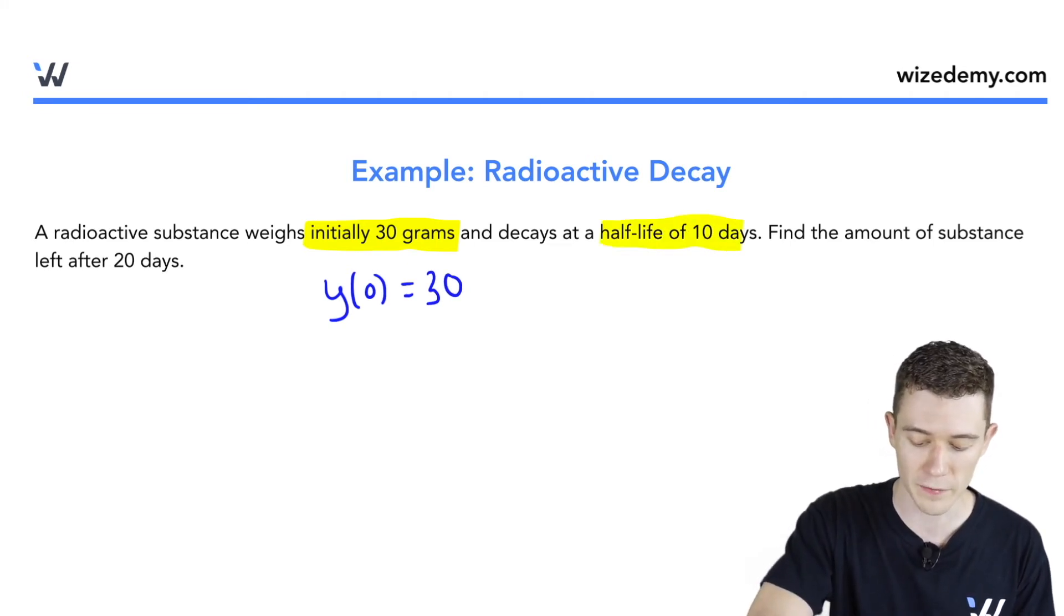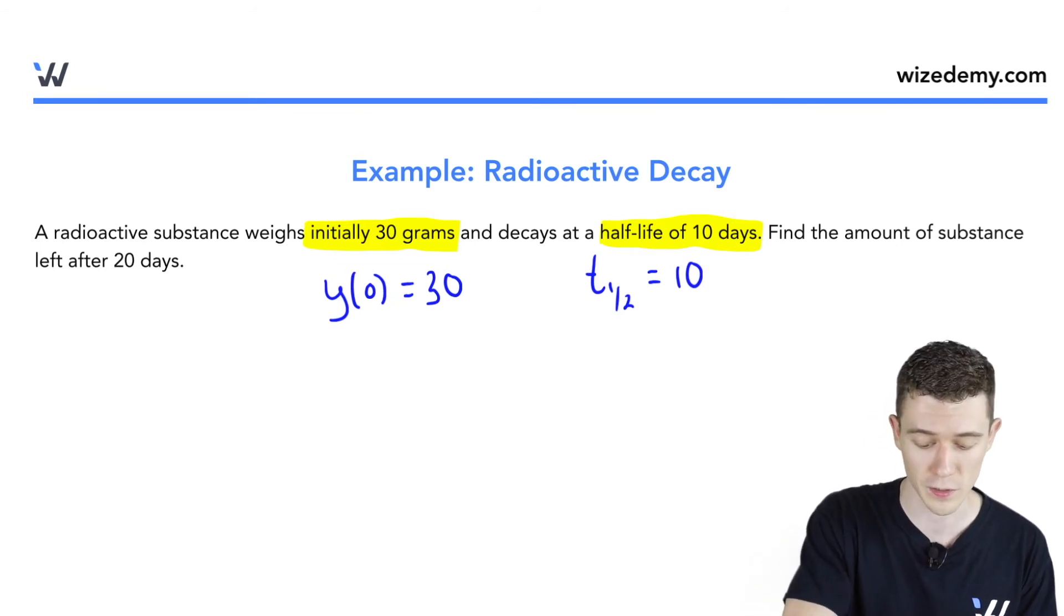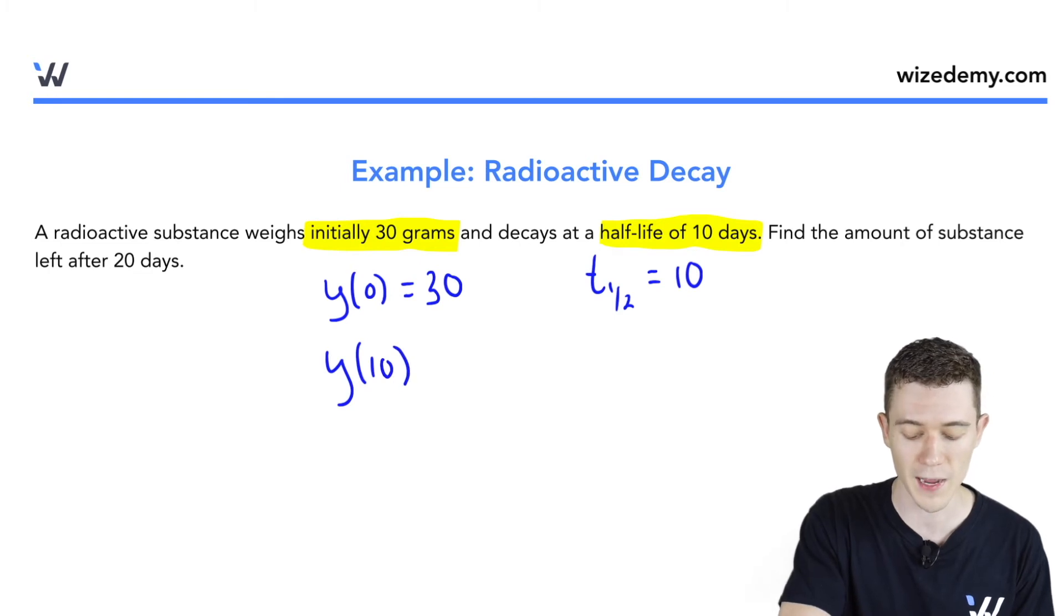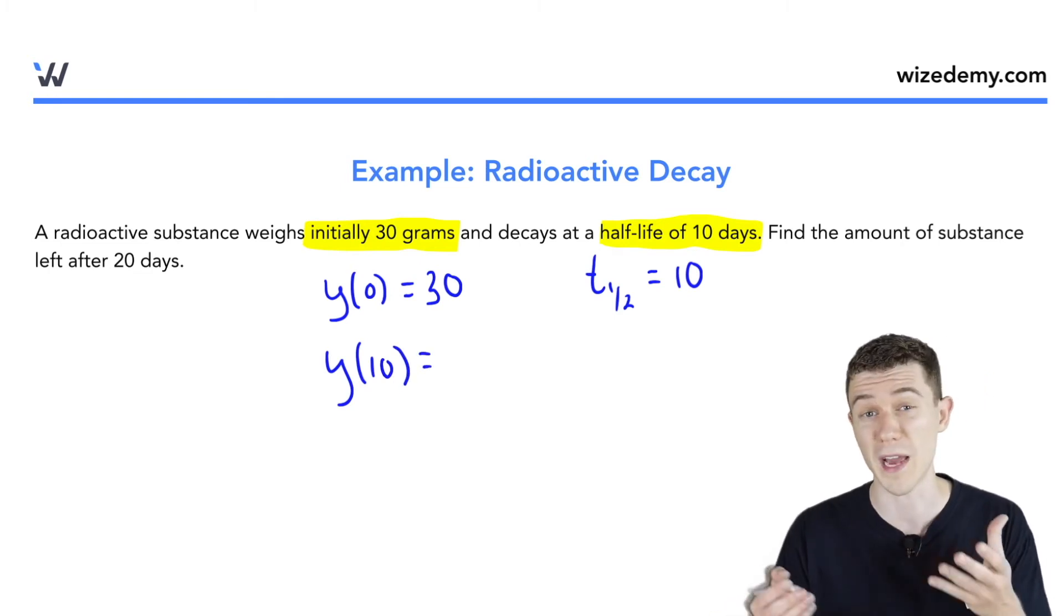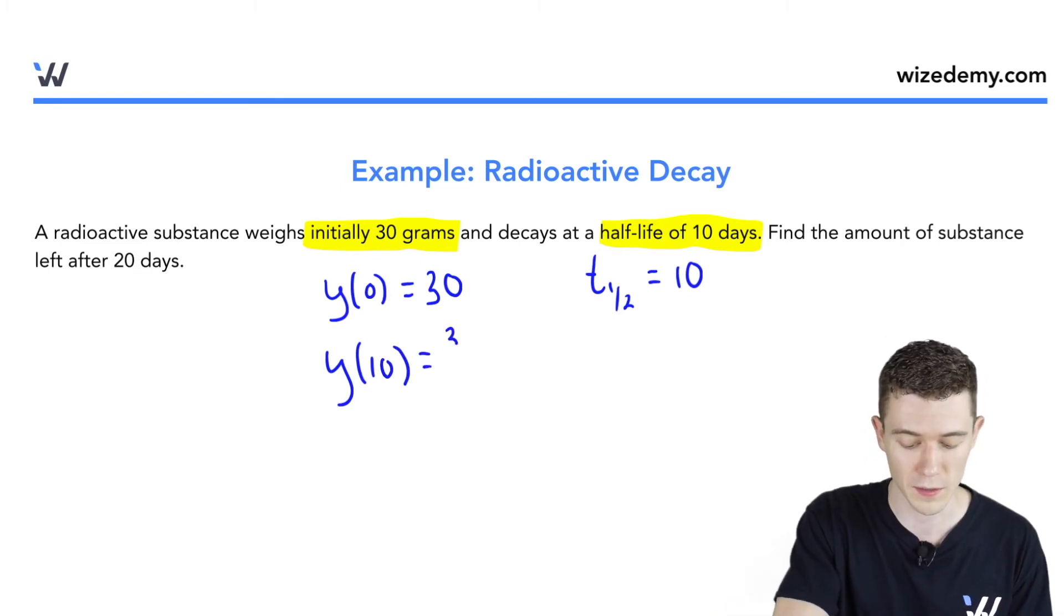We're also given the half-life of 10 days. You can use that notation t sub 1/2 equals 10 here, or you can write what this means in terms of our function: that if we substitute the value of 10 into our function, we should be left with half the original substance, 30 over 2, or 15.